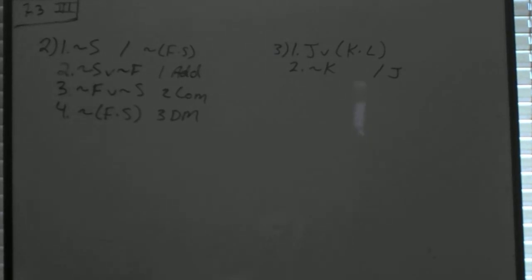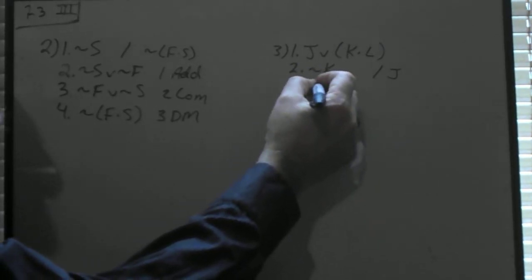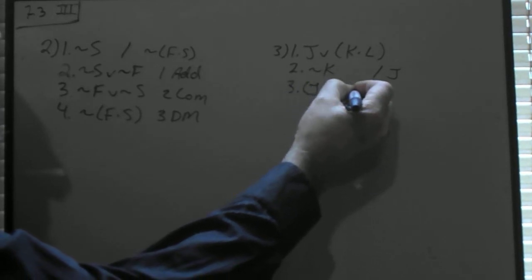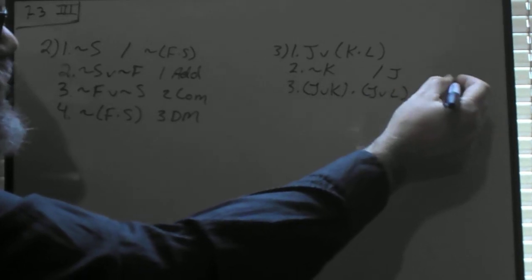But the book wants you to practice these different rules. So how can we do this in that respect? Well, if you look at line 1, J or K and L, it looks like we could use distribution on that line, and that would become J or K and J or L, line 1 through distribution.